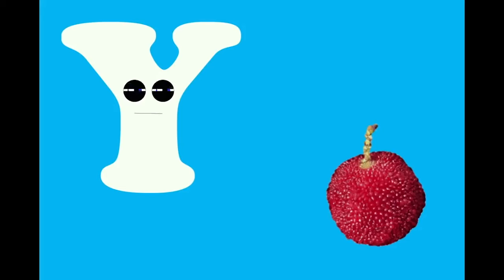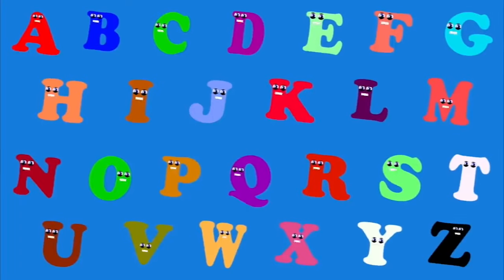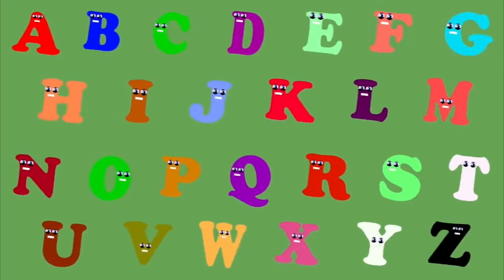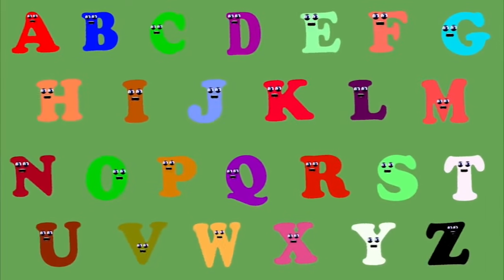U — ugly fruit. V — vanilla. W — watermelon. X — xylocarp. Y — youngberry. Z — zucchini. This is a fruit phonics song, so come and sing along. Eat your fruit every day and you will grow real strong.